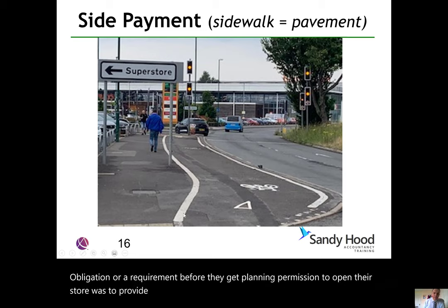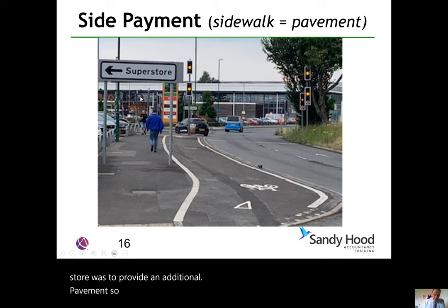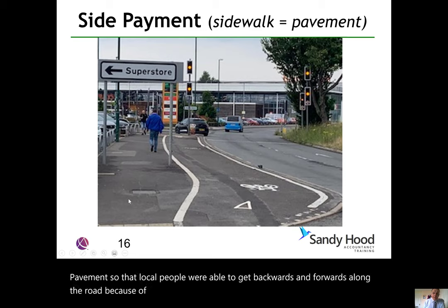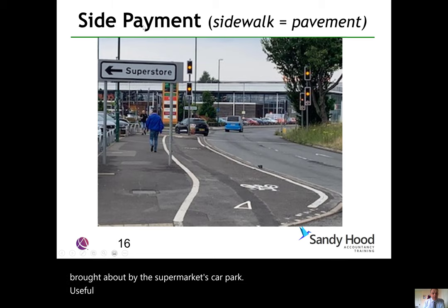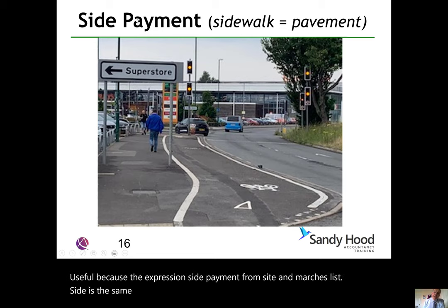That requirement was to provide an additional pavement so that local people were able to get backwards and forwards along the road, because of the additional traffic flow brought about by the supermarket's car park. This is useful because the expression 'side payment' from Cyert and March's list — 'side' is the same as 'sidewalk,' the American expression for pavement, and 'pavement' sounds rather like 'payment.'